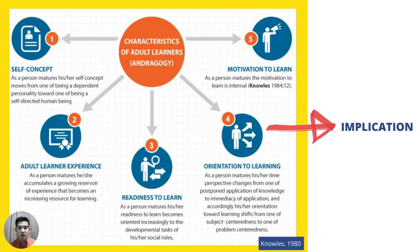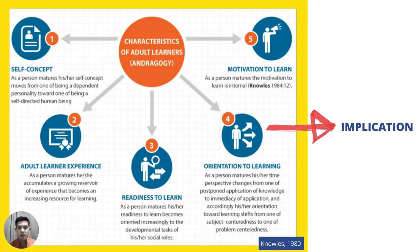The four assumptions from 1980 are: first, as individuals mature, their self-concept moves from being a dependent personality toward being a self-directed human being — adult learners are actually independent in their learning. Second, they accumulate a growing reservoir of experience that becomes an increasingly rich resource for learning, meaning the teacher is not the only source of knowledge; the adult learners themselves are resources of information in the classroom.